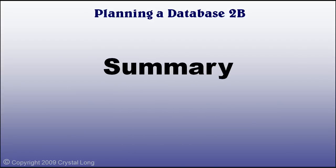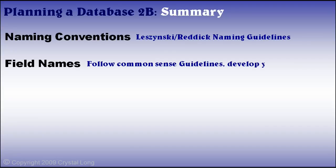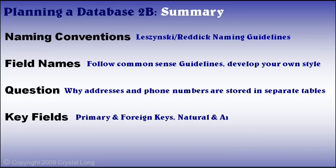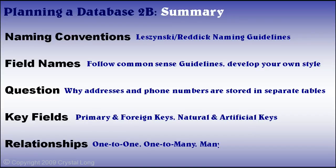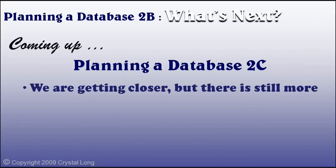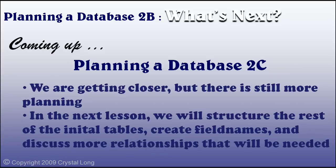We discussed the Leszczynski-Reddick naming convention. We set up field names for the table that is the heart of our database — people. We answered the question about why addresses and phone numbers are stored in separate tables. Primary keys and foreign keys are very important. There are three types of relationships: one-to-one, one-to-many, and many-to-many. In the next lesson, we will structure the rest of the initial tables, create field names, and discuss more relationships that will be needed.